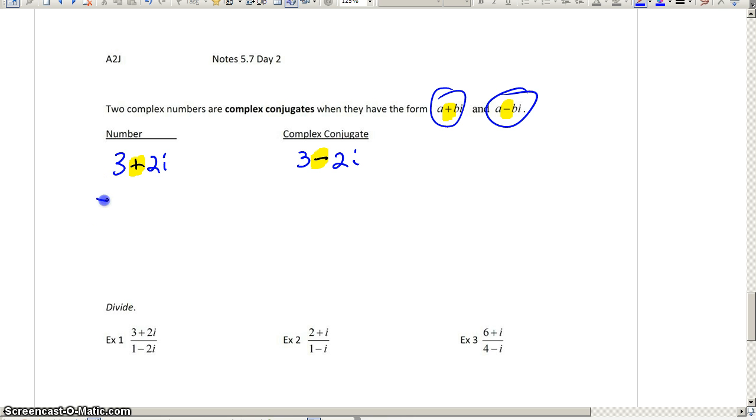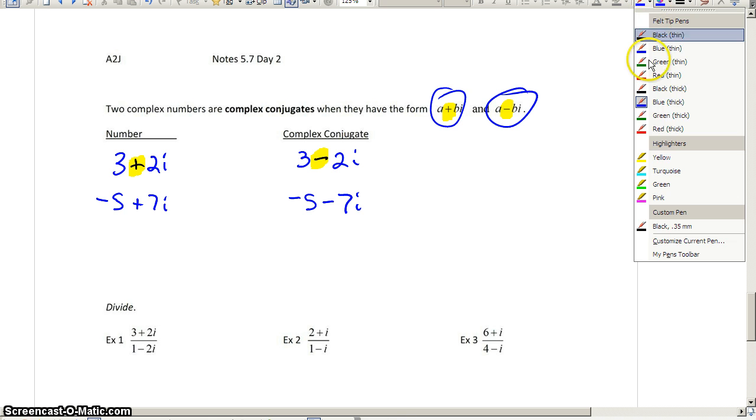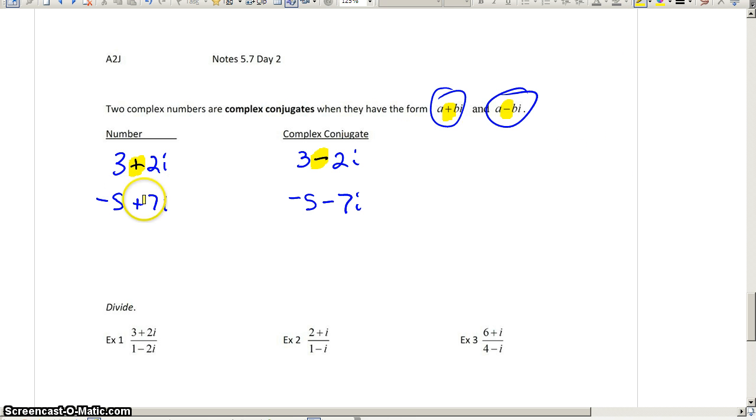This is even true if your first number is a negative. Let's say I gave you negative 5 plus 7i. The complex conjugate would be negative 5 minus 7i. The negative 5 you don't change to a positive 5. Rather, you're looking at the sign in between those two terms. That's what you're going to change.